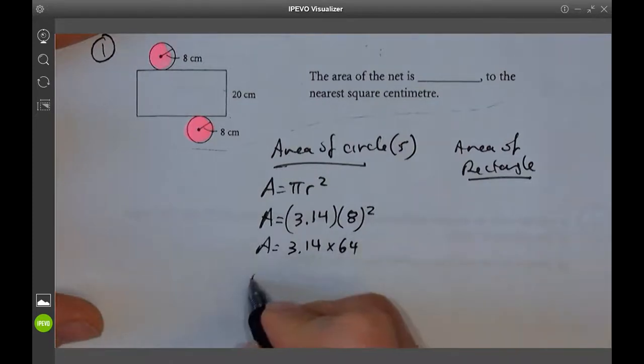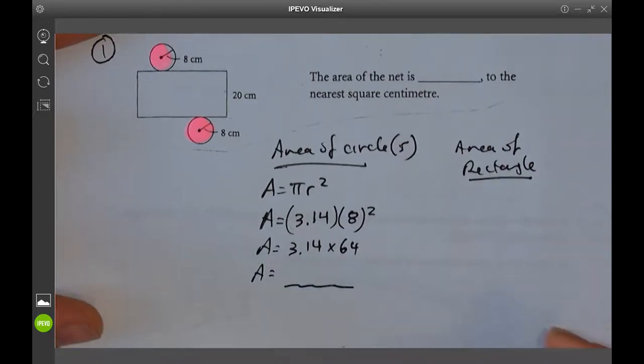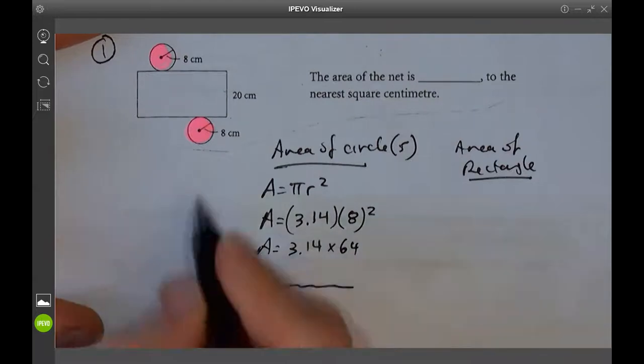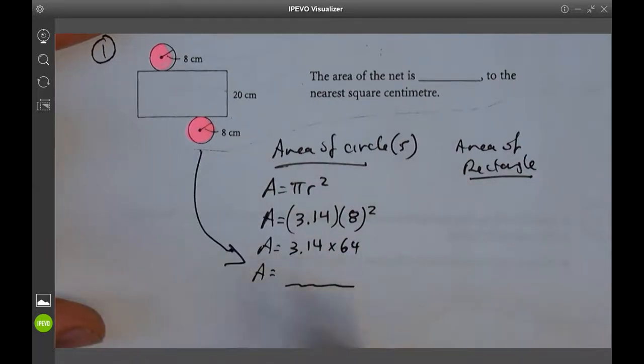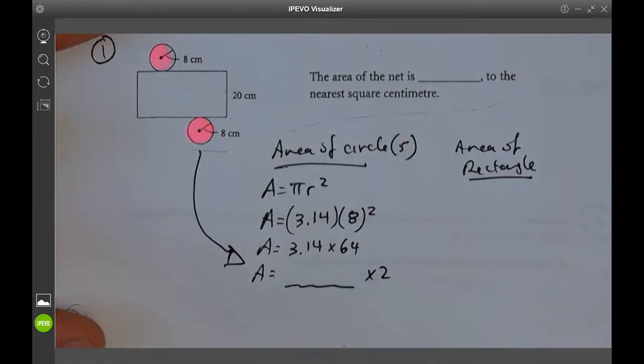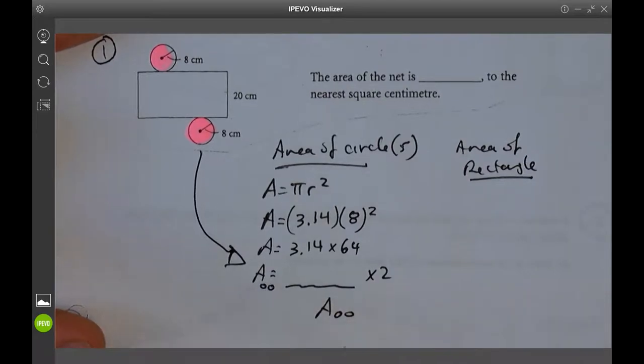All right, you're going to use a calculator to solve that. And you're going to get the area of a circle, one of those circles. But there are two areas of circles, so you can multiply this number by 2, and you're going to get the area of two circles.